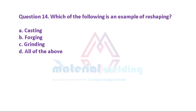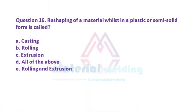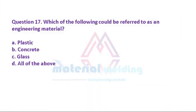Question 14: Which of the following is an example of reshaping? A. Casting. B. Forging. C. Grinding. D. All of the above. Question 15: The process of solidification during casting can be likened to that of the: A. Forging process. B. Rolling process. C. Welding process. D. Extrusion process. Question 16: Reshaping of a material whilst in a plastic or semi-solid form is called: A. Casting. B. Rolling. C. Extrusion. D. All of the above. Question 17: Which of the following could be referred to as an engineering material? A. Plastic. B. Concrete. C. Glass. D. All of the above.